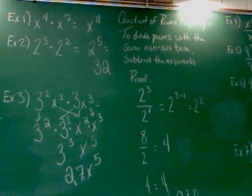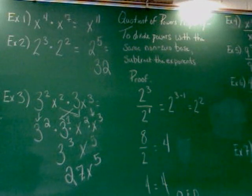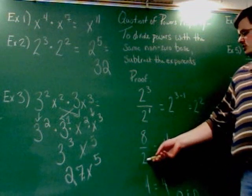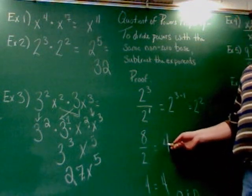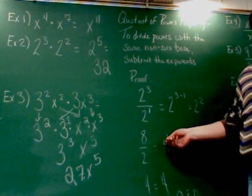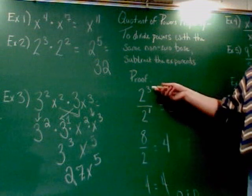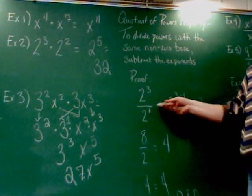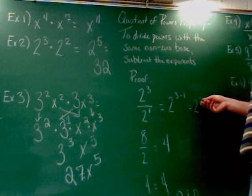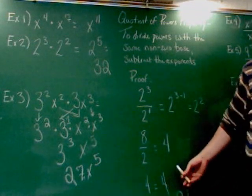Underneath that you see the proof. Real simple problem. 2 to the third divided by 2 to the first. You can figure out both of those in your head. That's why I'm giving you an easy proof. 2 to the third would be 2 times 2 times 2, which is 8. And 2 to the first would be 2. And when I do 8 divided by 2, I get 4. That's the correct solution. The rule says, though, I can just subtract the exponents. So I can just do 3 minus 1, which is 2. So I would have 2 squared. You know that 2 times 2 is also 4. So it works.